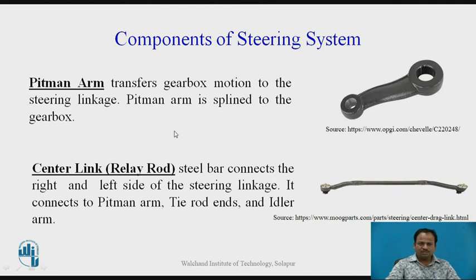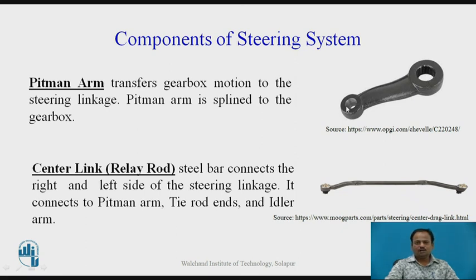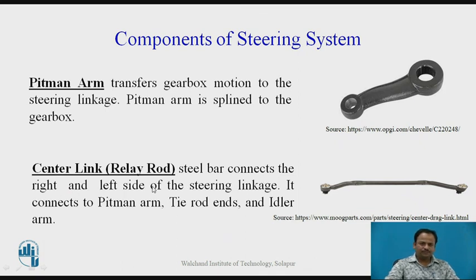Looking at the steering linkage components in detail: the Pitman arm transfers gearbox motion to the steering linkage and is splined to the gearbox via a splined hole. It has a threaded hole connected to the center link and relay rod. The center link, also called the relay rod, is a steel bar that connects the right and left sides of the steering linkage, connecting to the Pitman arm, tie rod ends, and idler arm.